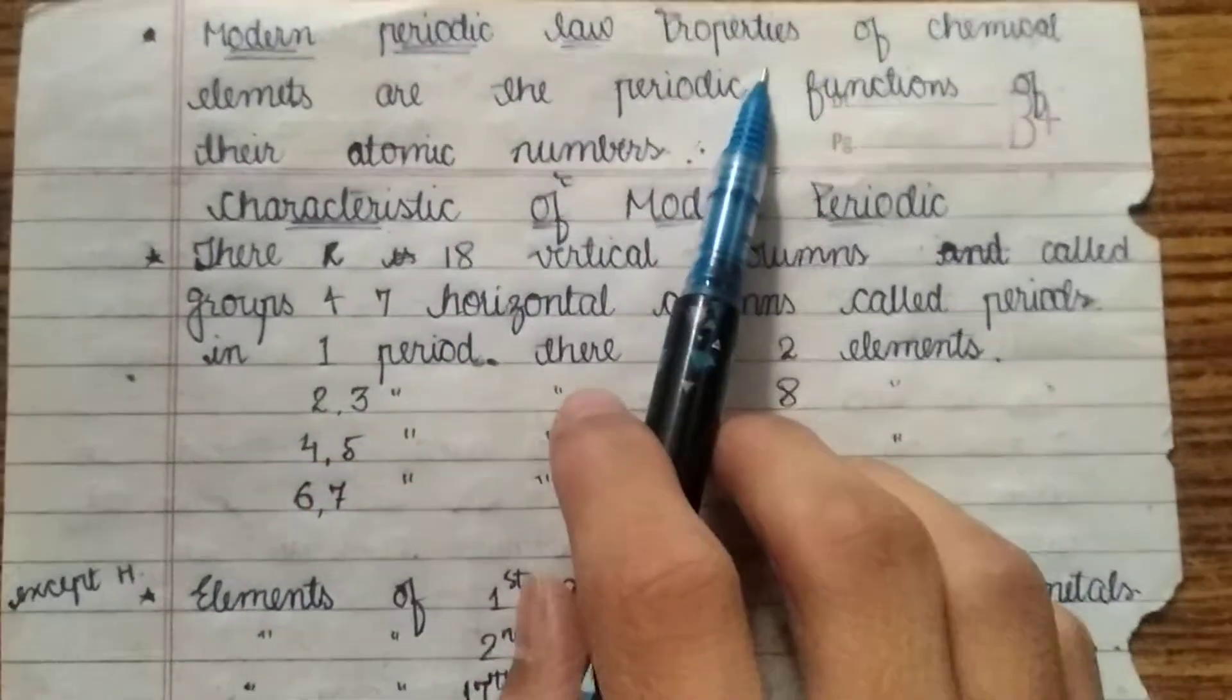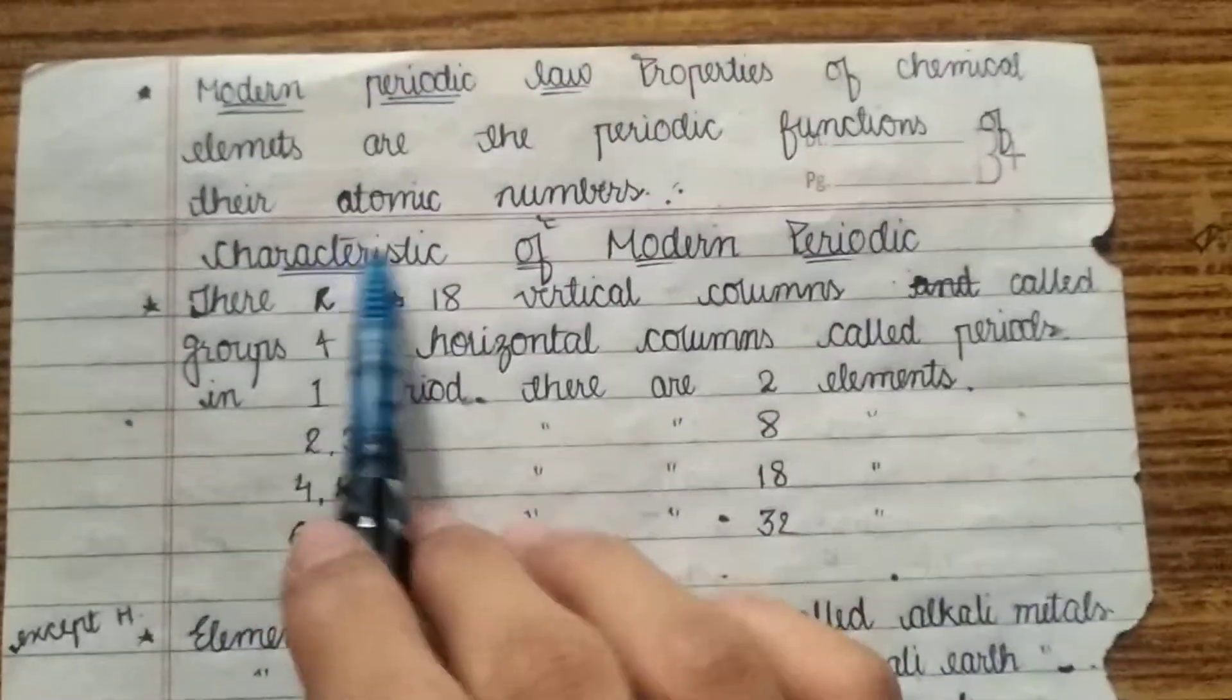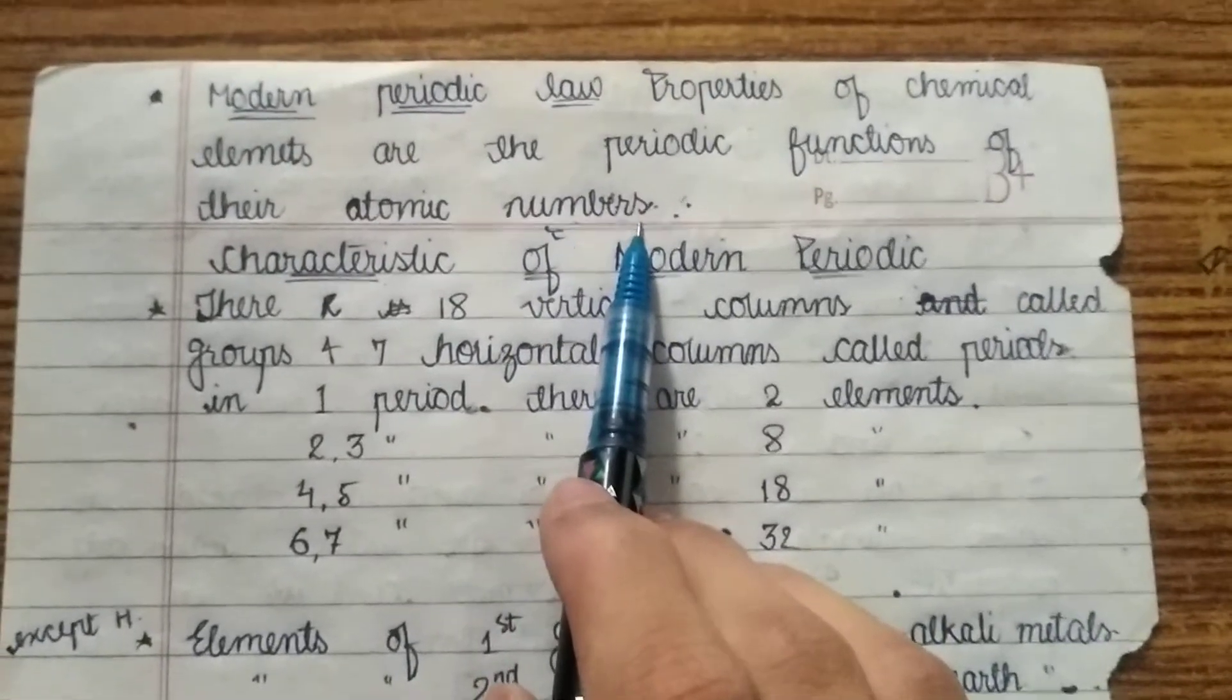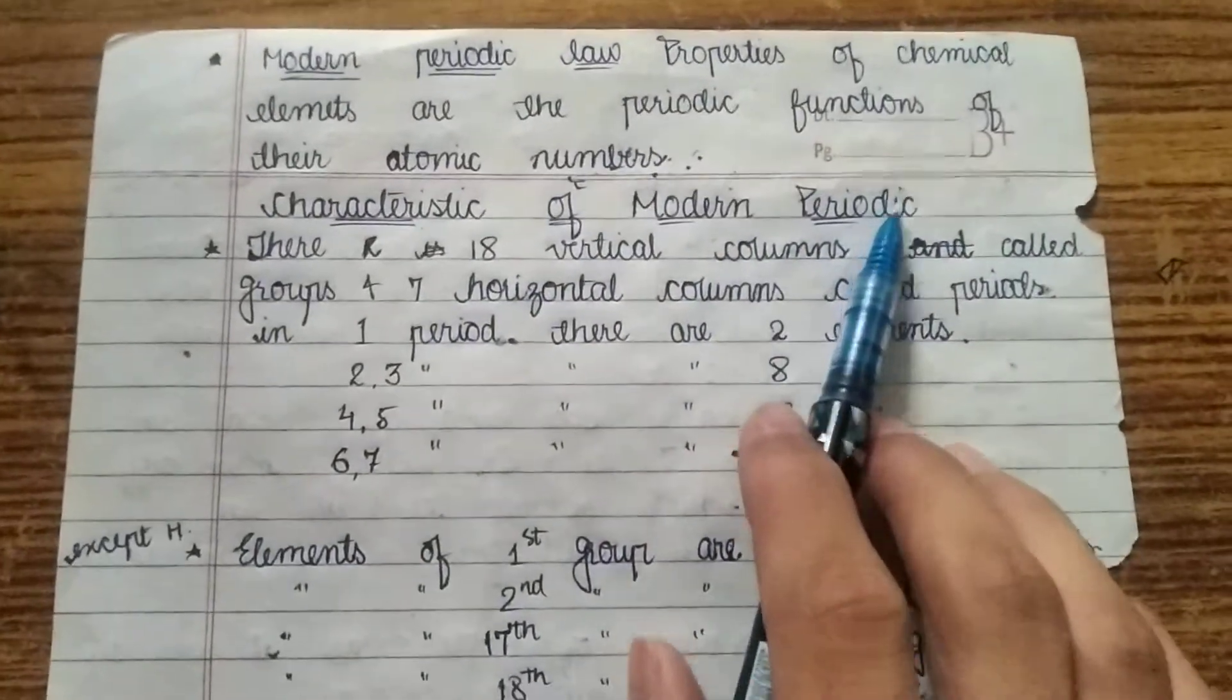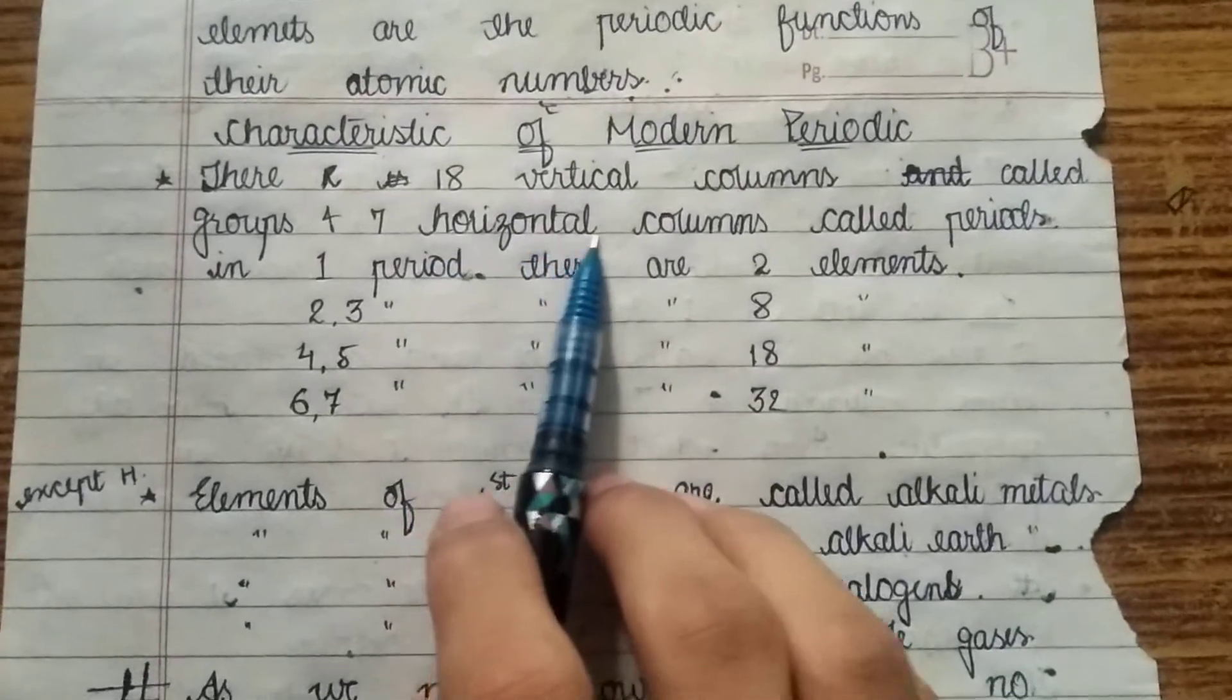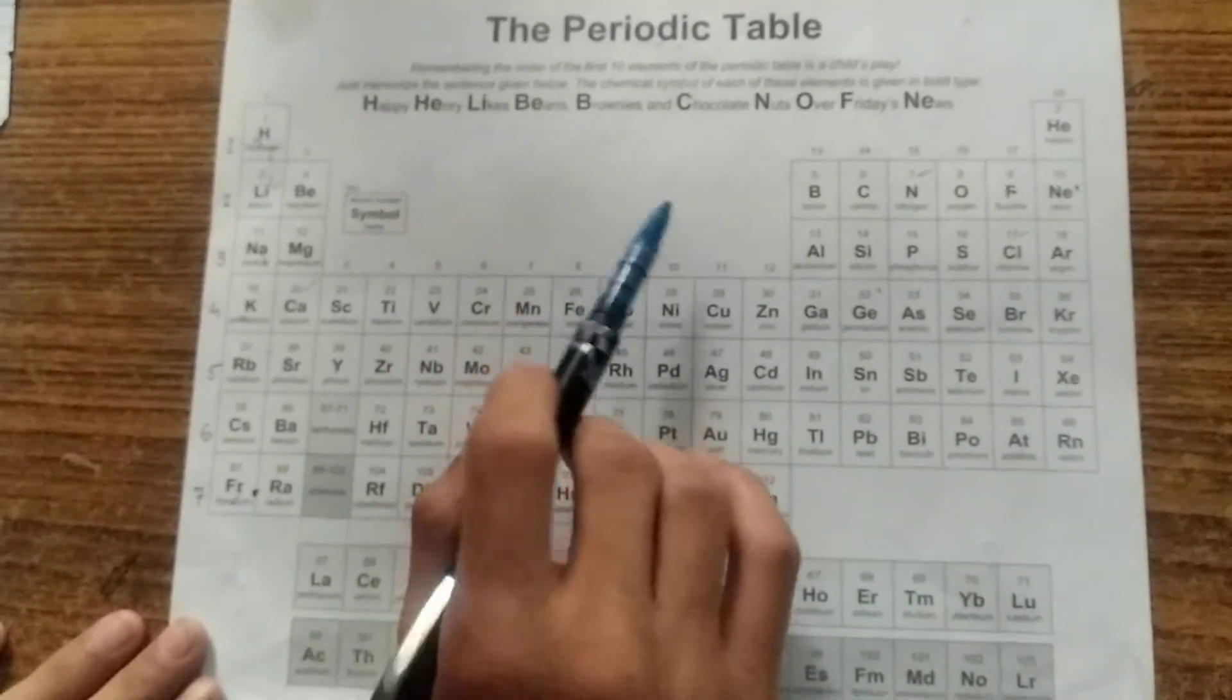Now we will see modern periodic law. Properties of the chemical elements are the periodic function of their atomic numbers. Last there was atomic masses and now atomic numbers. Characteristics of modern periodic table. There are 18 vertical columns called the groups and 7 horizontal columns called periods. Now I will explain you the periodic table with the help of a chart.